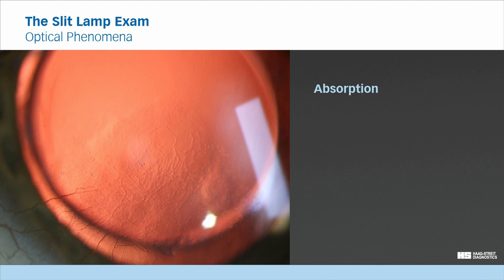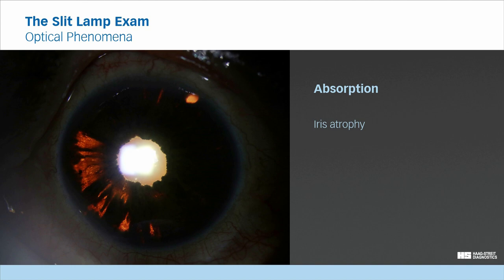During slit lamp examination, this phenomena can be used for assessing subtle changes. In this case of corneal neovascularization, it allows to distinguish perfused vessels from empty vessels. Or it can demonstrate an iris atrophy by trans illumination.